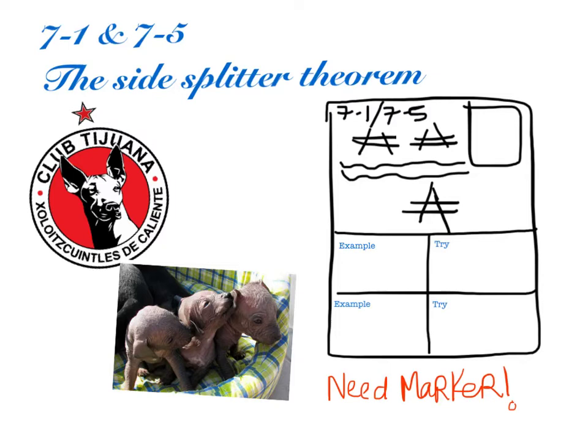Your notes today are going to look like this. We're going to be doing some diagrams on the top. You're going to need to split your paper in half, and in the bottom section, set it into 4 equal quadrants. The left side will be 2 examples, and the right side will be 2 tries. Before we get started, make sure you have a marker.